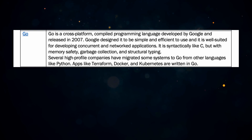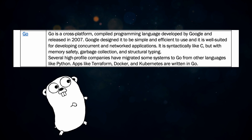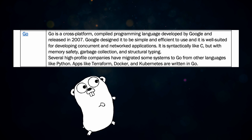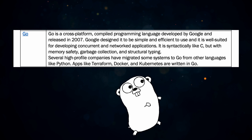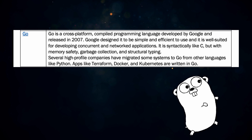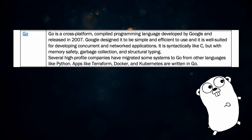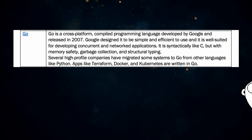Number two is Go, or Golang, a language I really like personally. Go is a cross-platform compiled programming language developed by Google and released in 2007. It's designed to be simple and efficient, well-suited for developing concurrent and networked applications. It's syntactically like C, but with memory safety, garbage collection, and structural typing. Several high-profile companies have migrated from Python to Go, and apps like Terraform, Docker, and Kubernetes are written in Go — an excellent memory-safe language to learn.